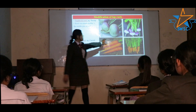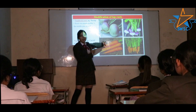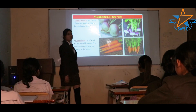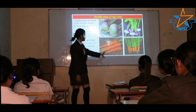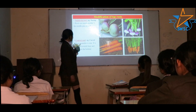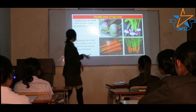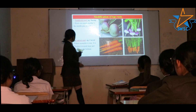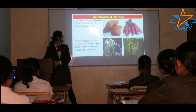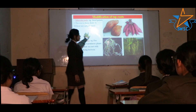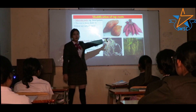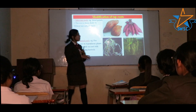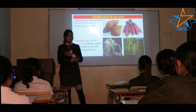Napiform roots — example, turnip — are swollen in the middle part. Conical roots — example, carrot — resemble a cone, being thickest at the base and tapering at the bottom. Tuberous roots — example, sweet potato — are thick and fleshy without any definite shape.